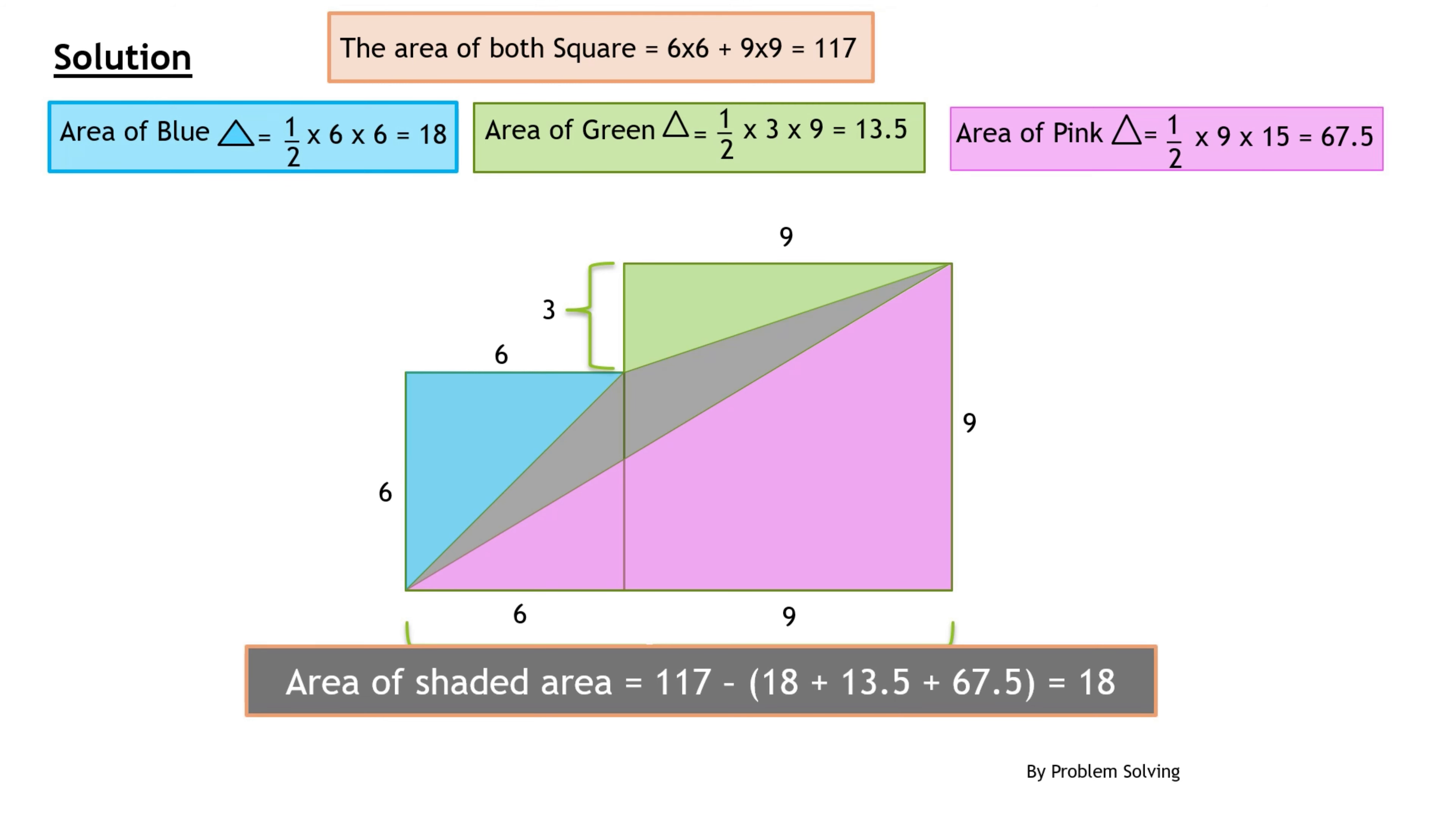So the area of the shaded area in grey is 18 plus 13.5 plus 67.5 subtracted from 117 which gives us 18.